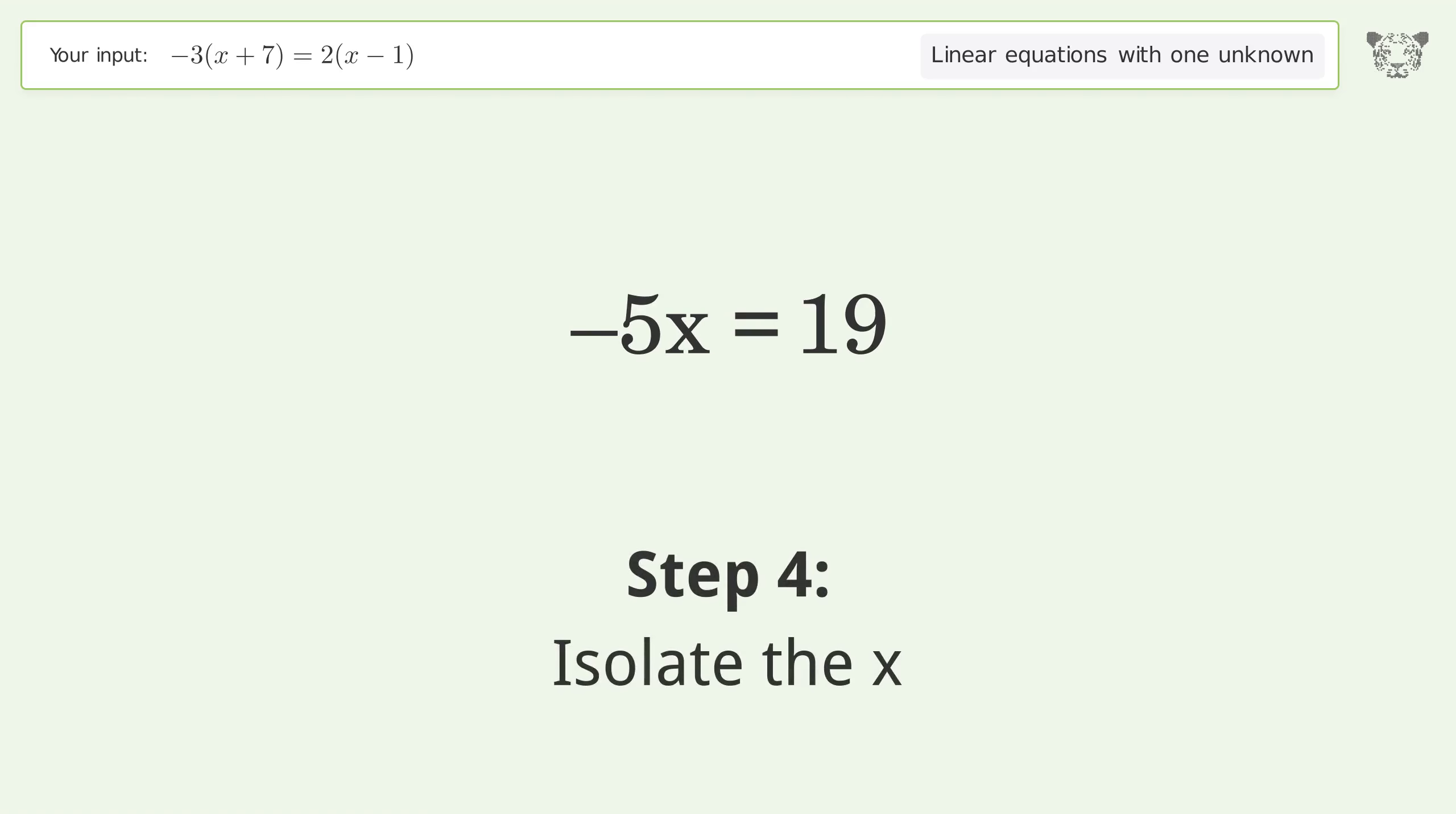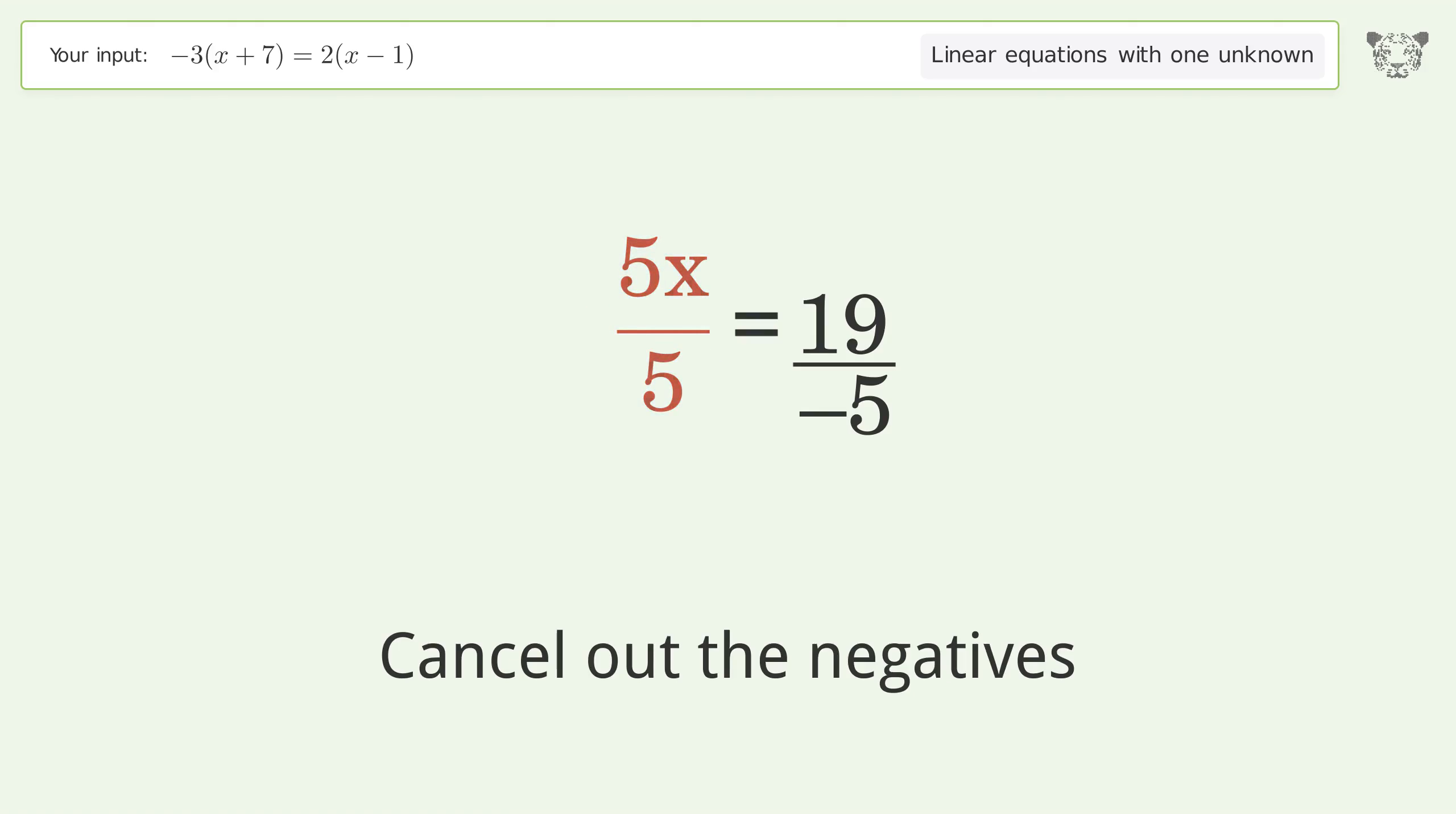Isolate the x. Divide both sides by negative 5. Cancel out the negatives. Simplify the fraction.